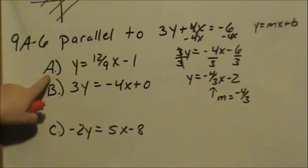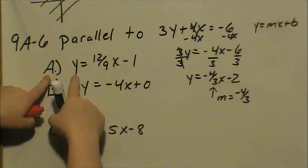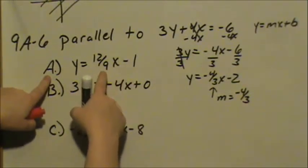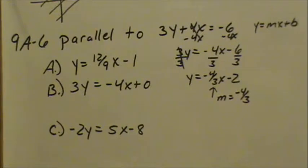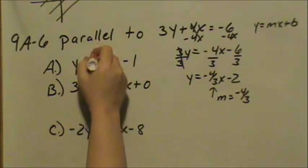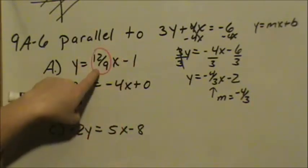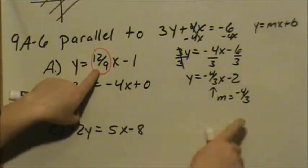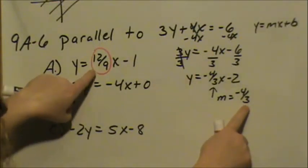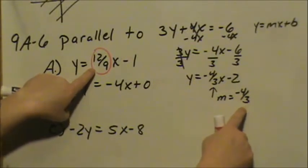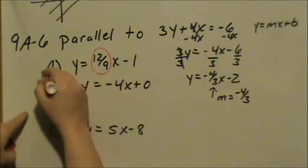So we look at A. We have y equals 12 ninths x. The 12 ninths is our slope, always reduce, but the main thing to look at is we want a slope of negative 4 thirds, this is a positive slope. So therefore, that's not the same slope, so that is not parallel.